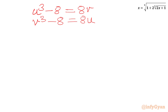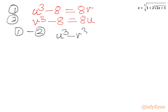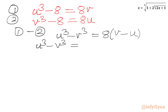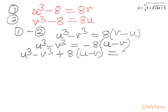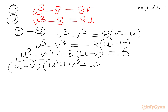Now we will subtract the second equation from the first. Performing operation 1 minus 2, the minus 8 terms cancel. On the LHS we get U cube minus V cube. On the RHS we get 8V minus 8U, which equals negative 8 times U minus V. Taking all terms to LHS: U cube minus V cube plus 8 times U minus V equals 0. Applying the a cube minus b cube formula: U minus V times the quantity U squared plus V squared plus UV, plus 8 times U minus V equals 0.